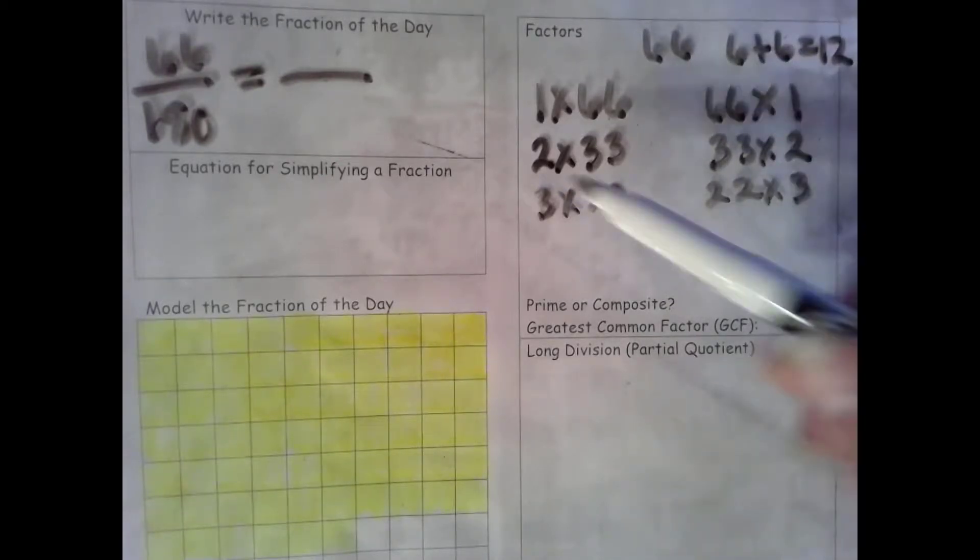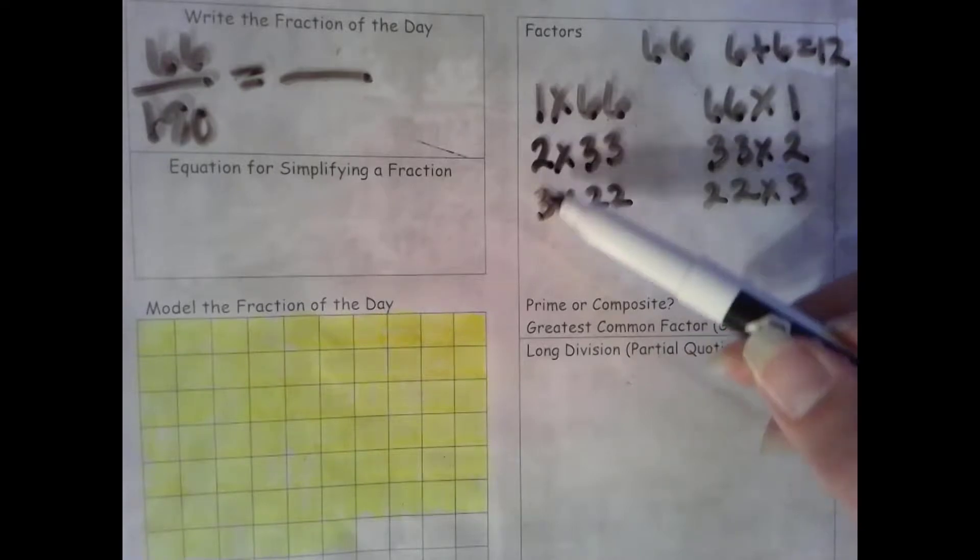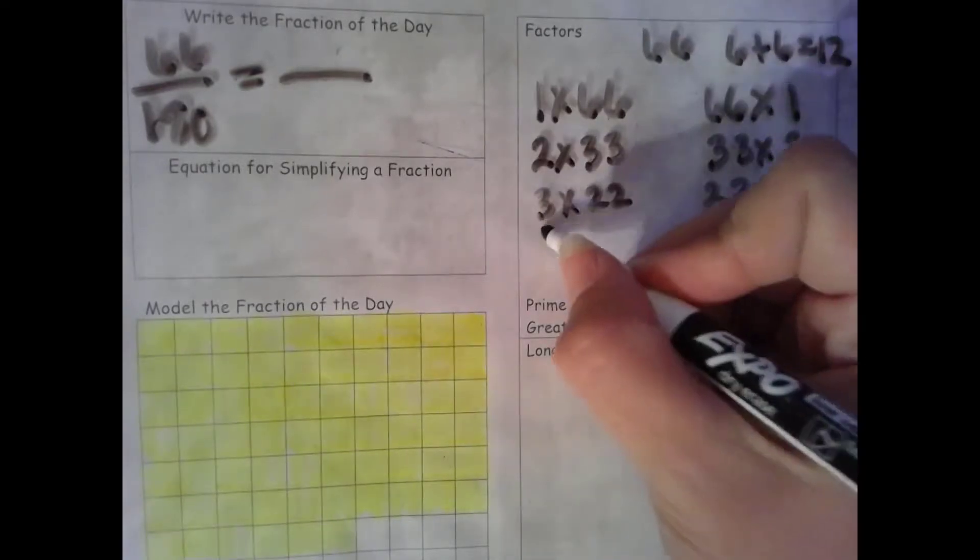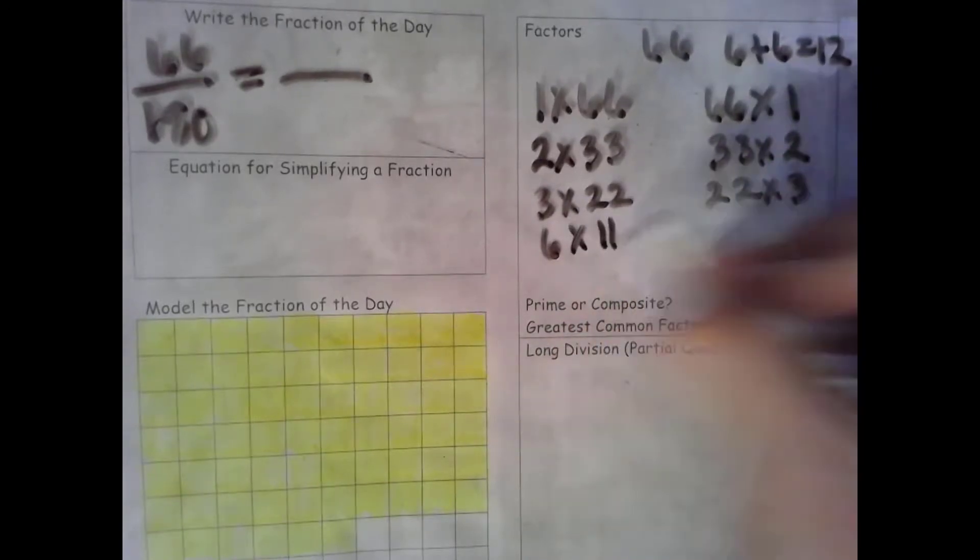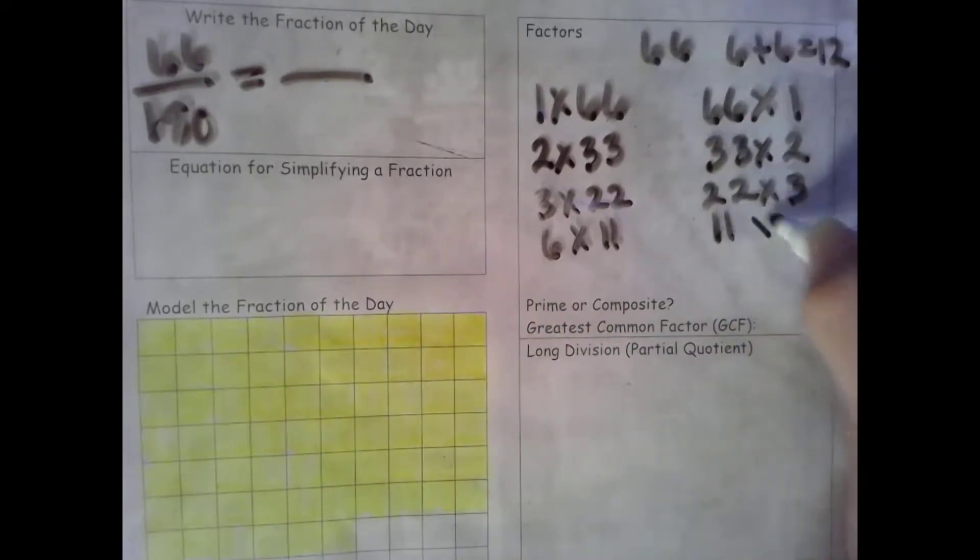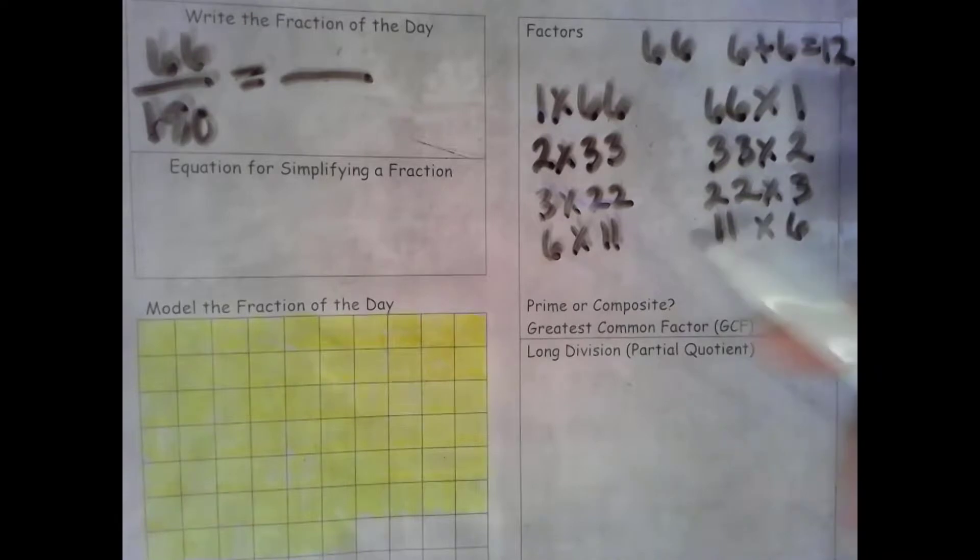The rule for 6 is that both 2 and 3 are factors. Both 2 and 3 are. So 6 times 11. 11 times 6. Now all we have to do is check the counting numbers or natural numbers between 6 and 11.